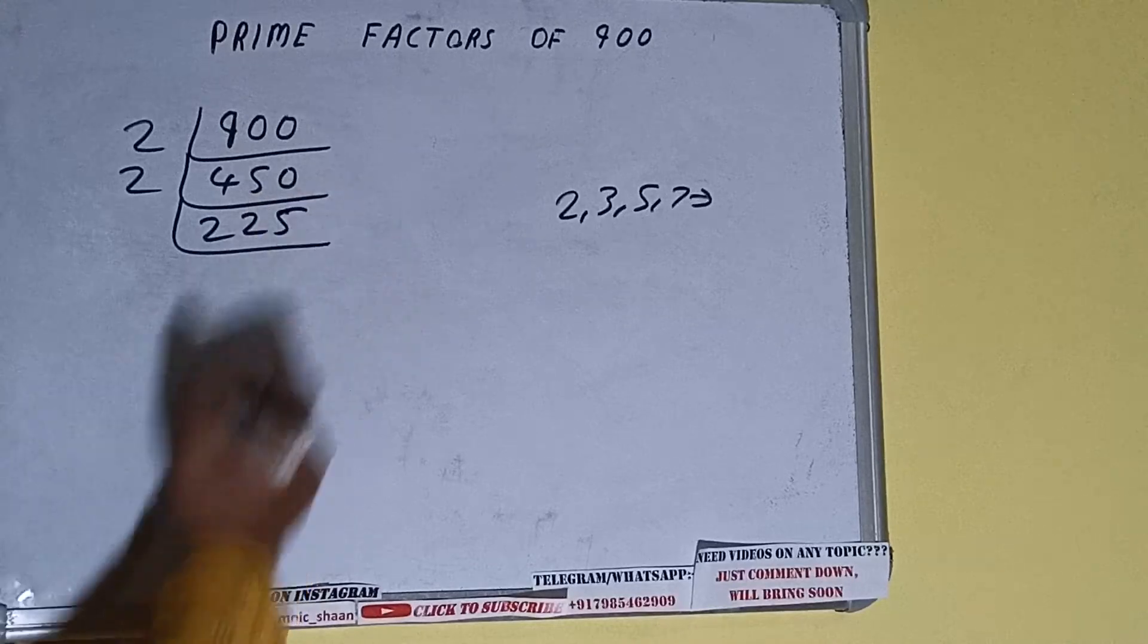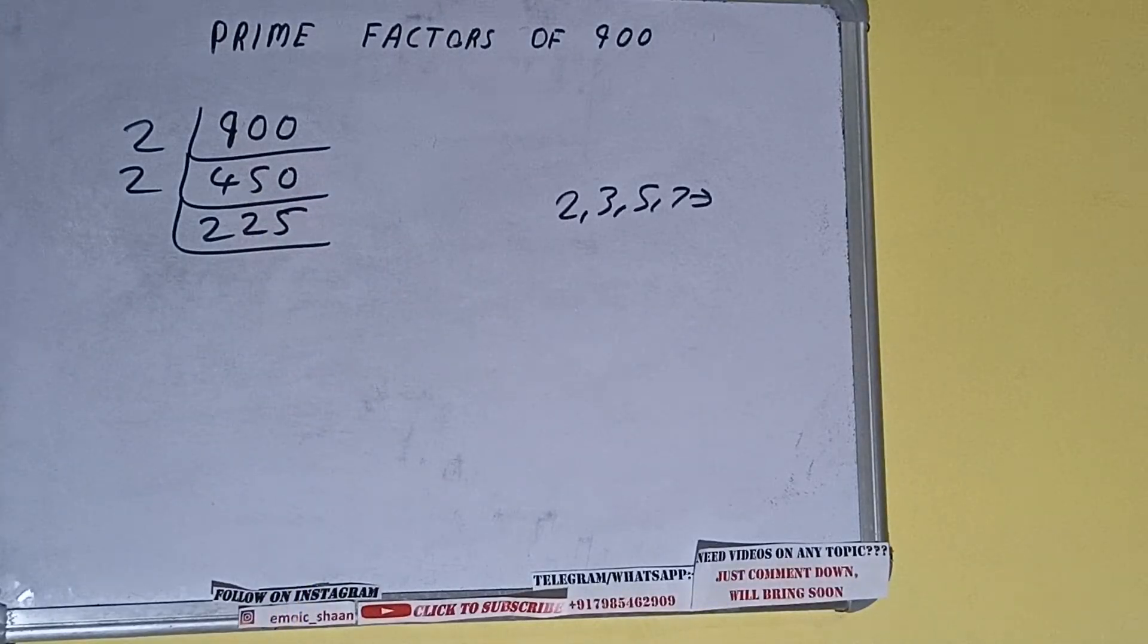We will be having 225. 225 is not divisible by 2 because it is an odd number. So we will check with the next lowest prime number, that is 3.